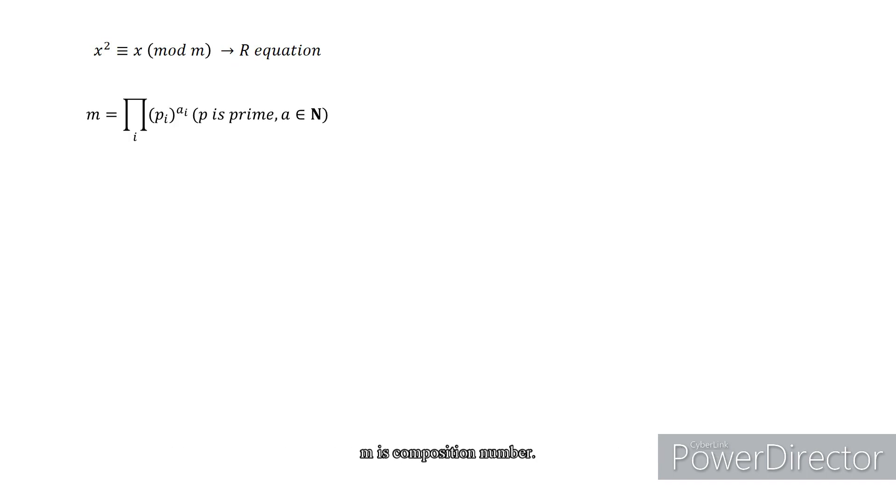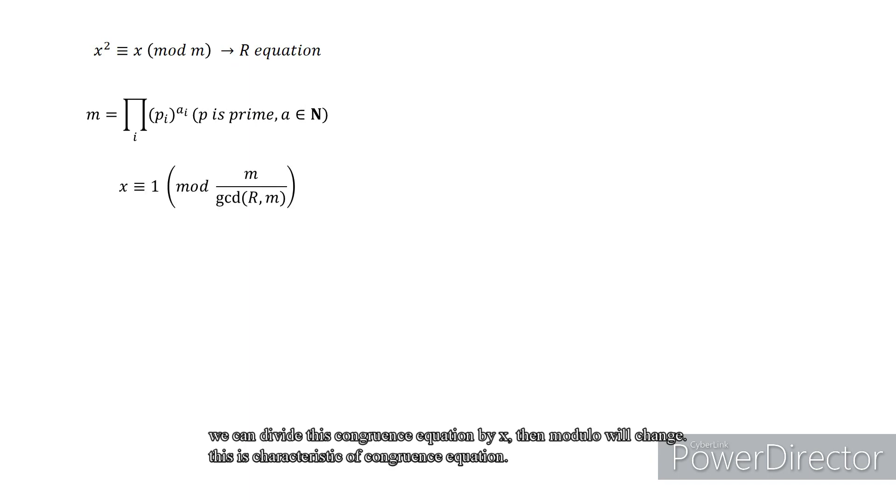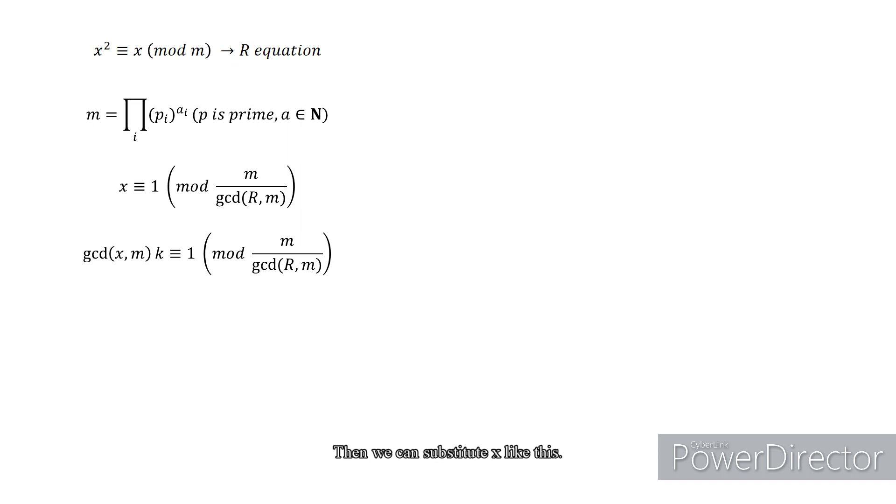m is a composition number. We can divide this congruence equation by x, then the modulo will change. This is a characteristic of congruence equations. Then we can substitute x like this.